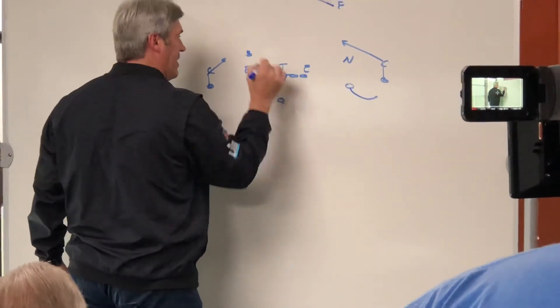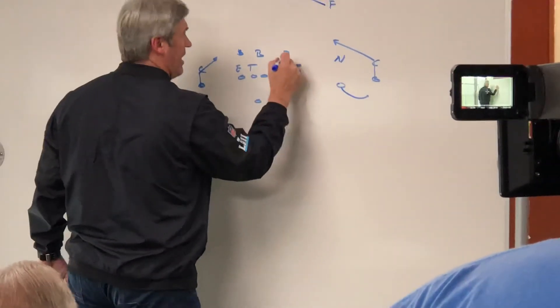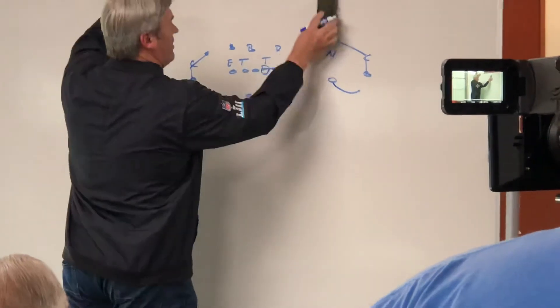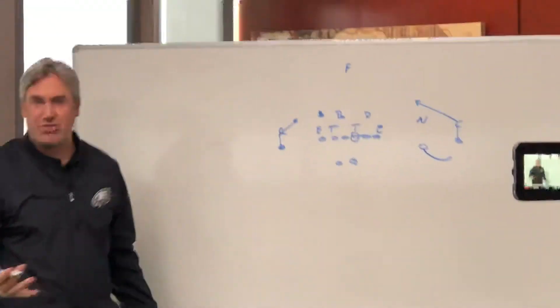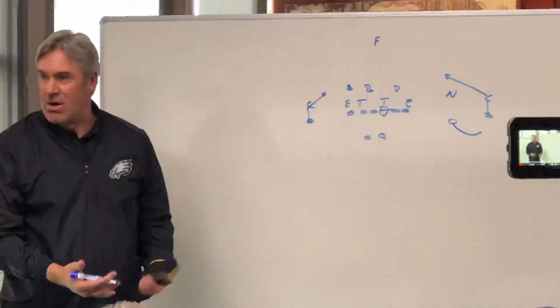Now let's say this safety is all the way down in the box. This safety is now in the middle of the field. And it becomes a true, now it becomes a true seven-man box. Now we have the numbers we want to take advantage of the throw.